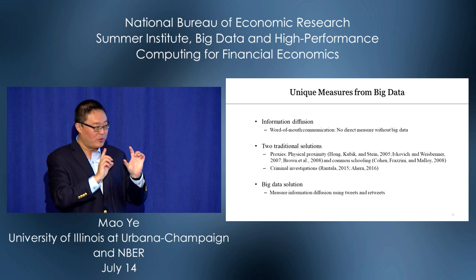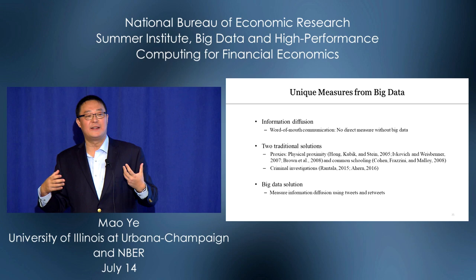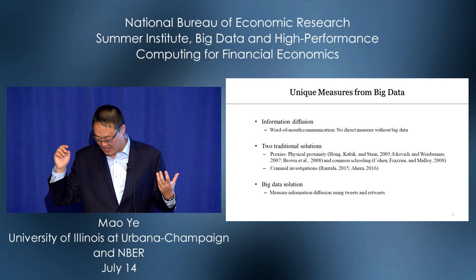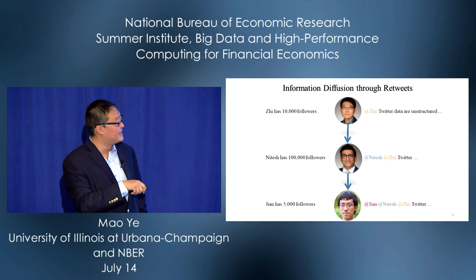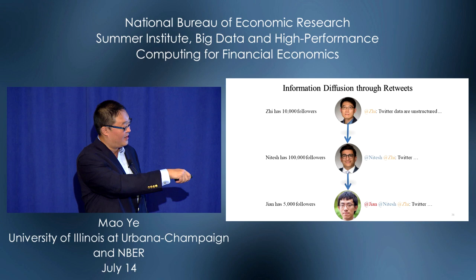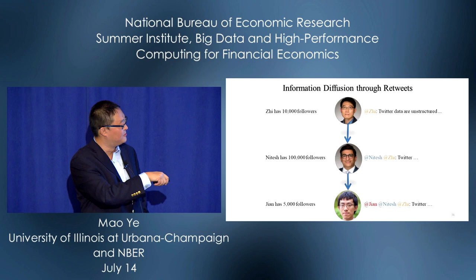The big data solution: think about tweets. You can sort of see information diffusion. For example, if G (my co-author) has 10,000 followers and tweets something about unstructured data, then tells Natish, who retweets to J — that's information diffusion.